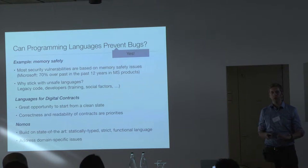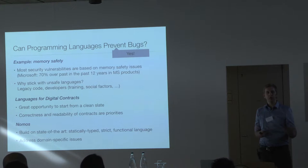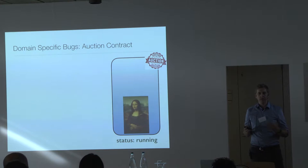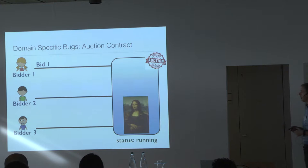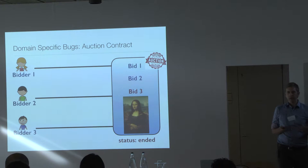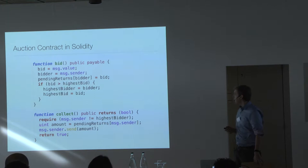The research is about additionally addressing domain-specific issues that are root causes of bugs in these contracts. To explain those issues, let's use an auction example. The auction has two states: running, when bidders can place bids, and ended, when we determine the highest bidder gets the lot and the other bidders get their bids back.